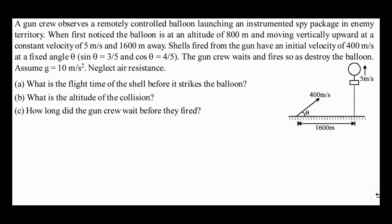Hello friends, let's solve this question. A gun crew observes a remotely controlled balloon launching an instrumented spy package in enemy territory. With the diagram you can observe that there is a balloon here, launching some kind of instrumented spy package in enemy territory.